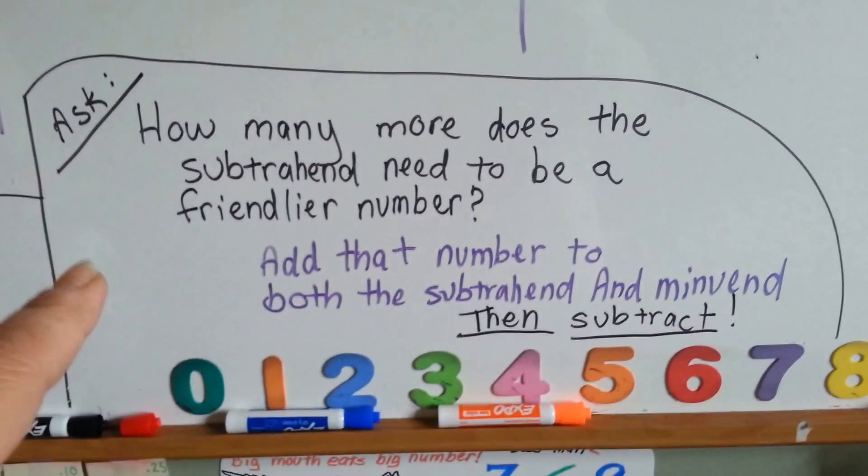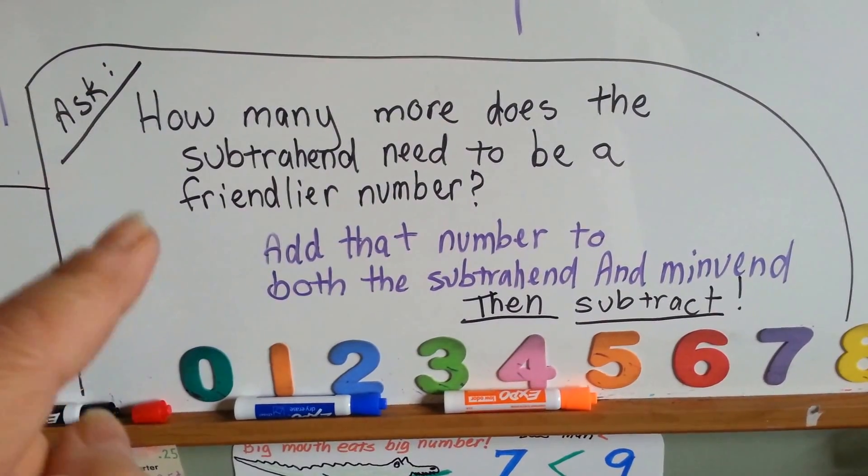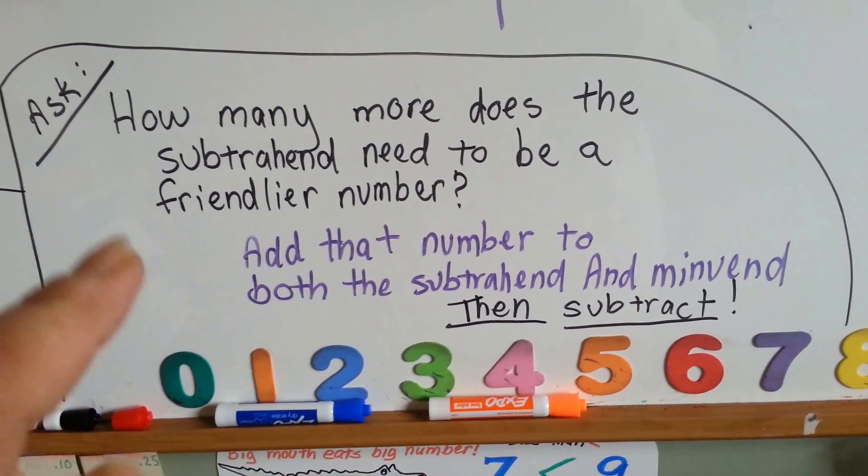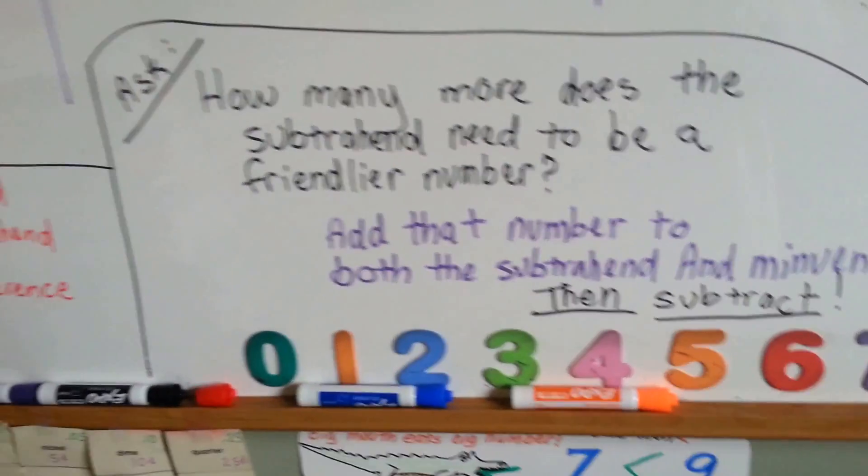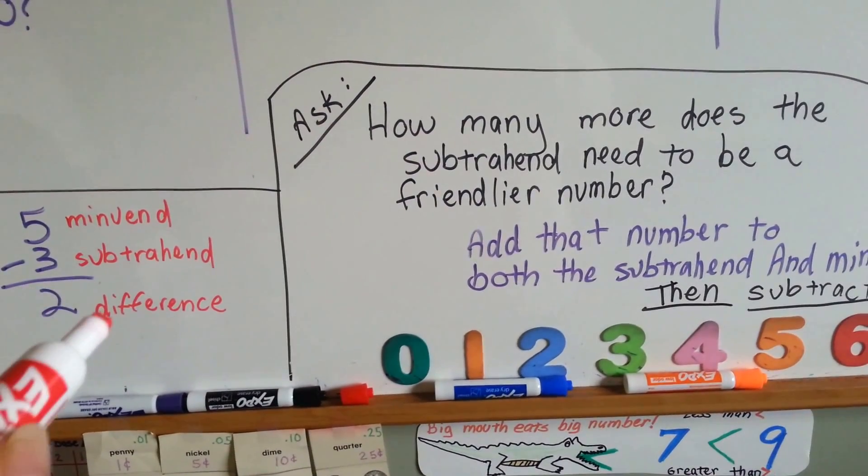So what you ask yourself is, how many more does the subtrahend need to be a friendlier number? You add that number to both the subtrahend and the minuend and then you subtract. So remember, this is the minuend, this is the subtrahend, and that's the difference.